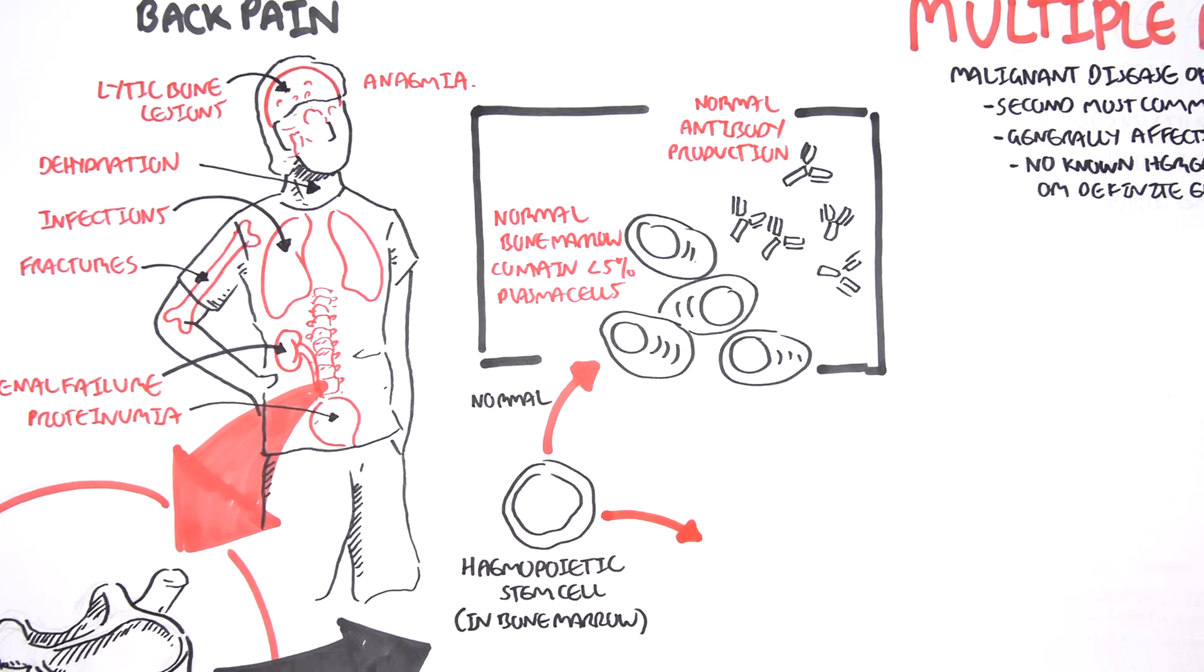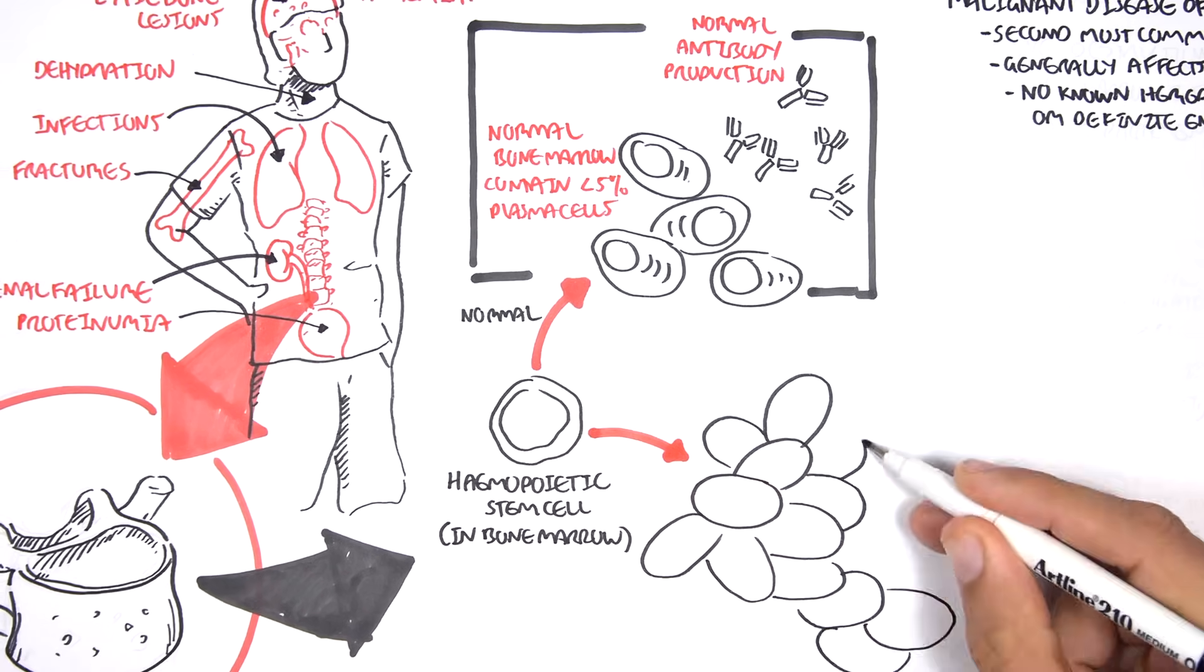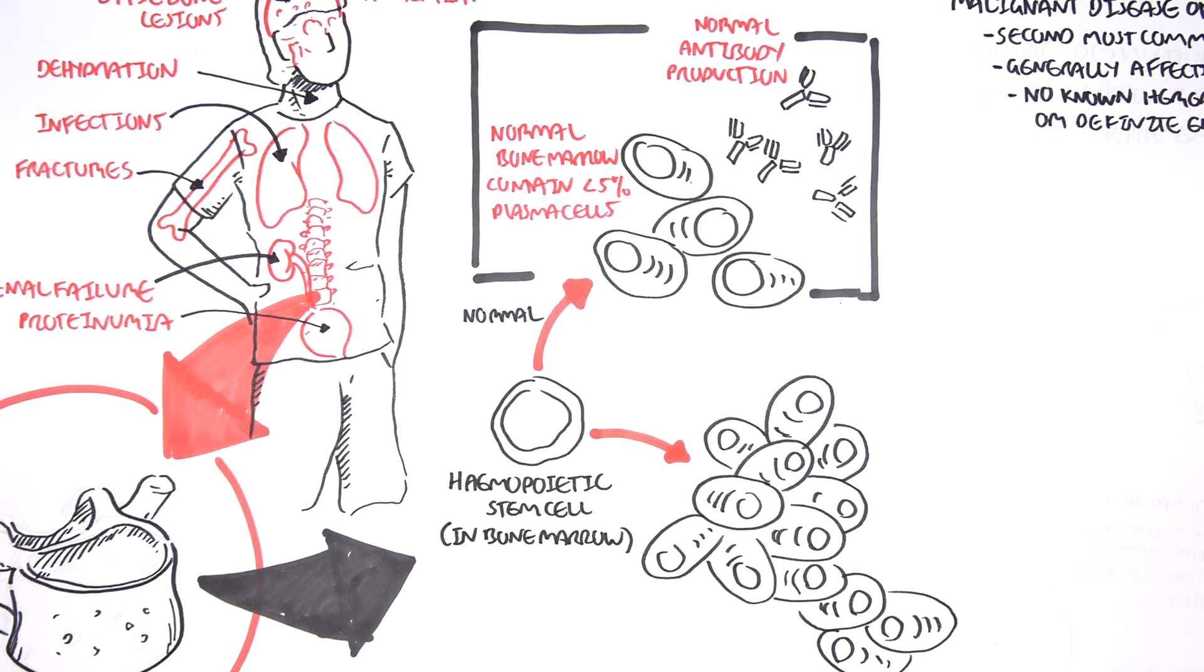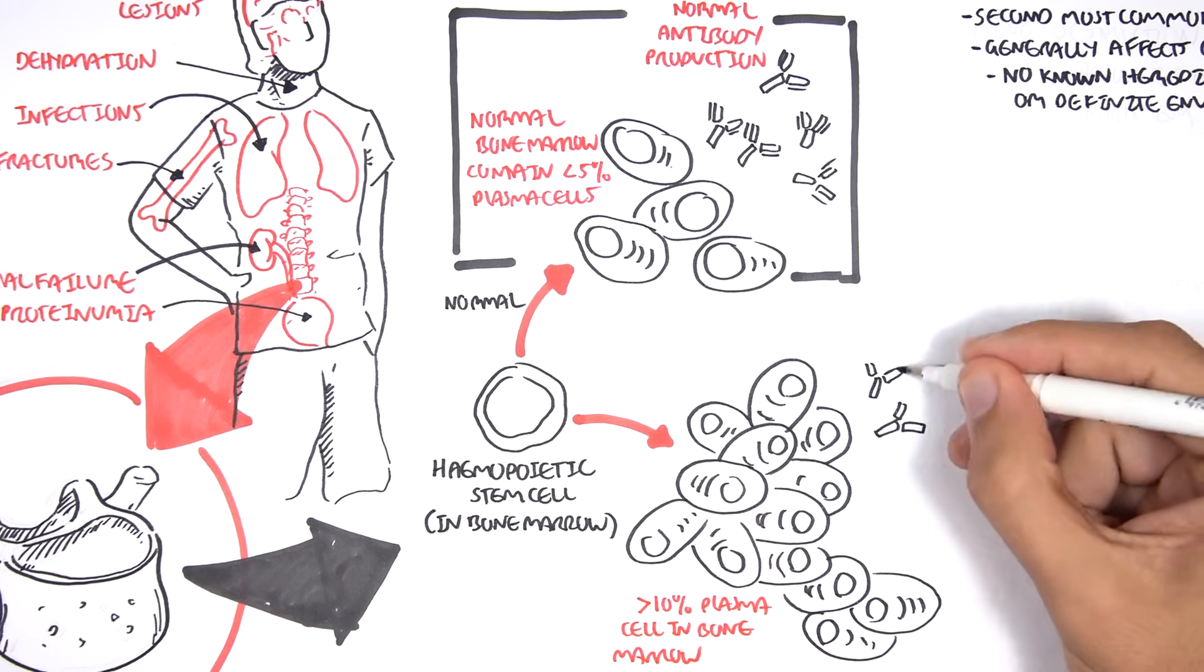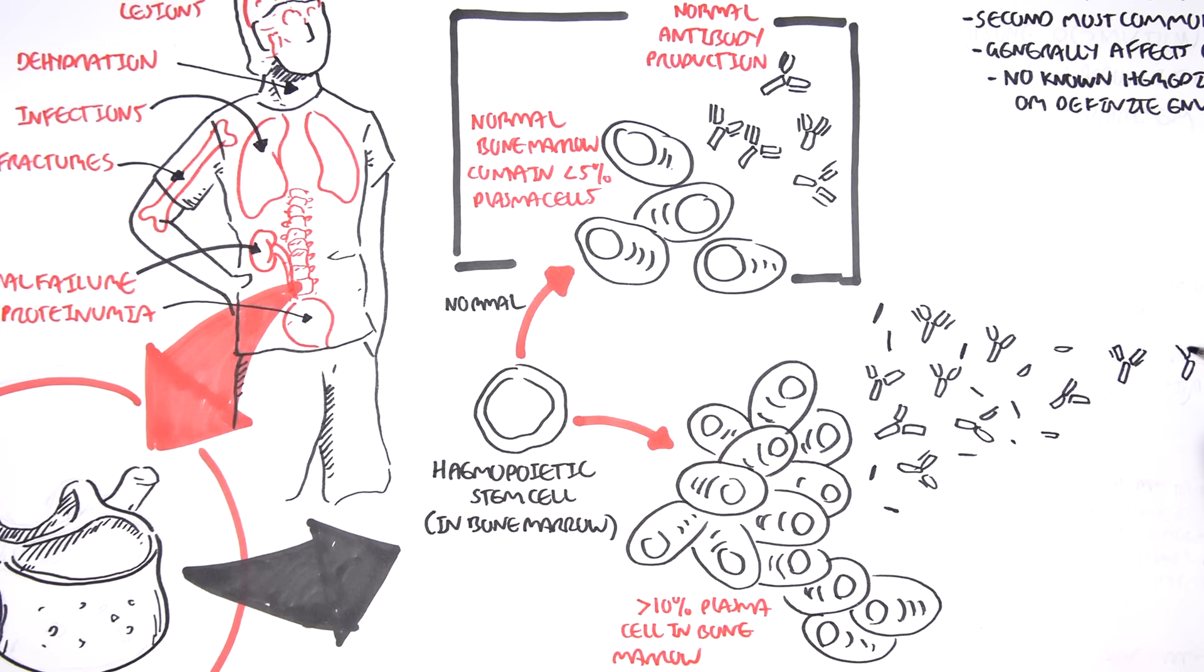Now in multiple myeloma, the hemopoietic stem cell shifts production mainly to produce more B cells and then finally plasma cells. Thus in the bone marrow we end up with more than 10% plasma cells occupying the bone marrow. And now these plasma cells secrete abnormal antibodies.